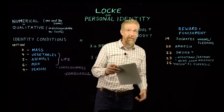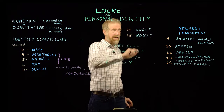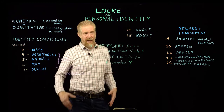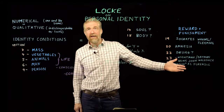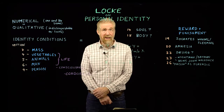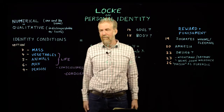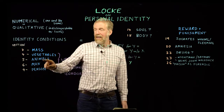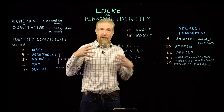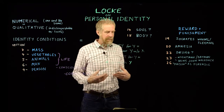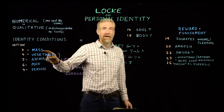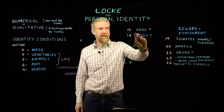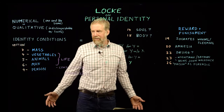Now, the body theory is the idea that what makes me the same as I am now is having the same body - what makes me the same as that kid I showed you the picture of is having the same body. Well, I obviously don't have the same body - it doesn't look the same, it's a lot bigger. But is it the same body in the sense that it's the same animal, the same living thing? A body theorist would say yes - it's the same living thing. But what Locke says is it's not having the same body that makes me the same person.